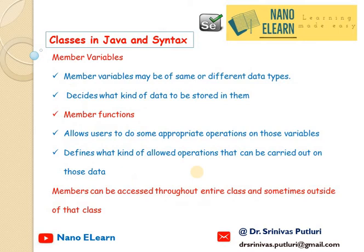What are member variables? Member variables may be of the same or different data types. They decide what kind of data is to be stored in the variables. What are member functions? They allow users to do some appropriate operations on those variables. They define what kind of allowed operations can be carried out on that data. Members can be accessed throughout the entire class and sometimes outside of that class.